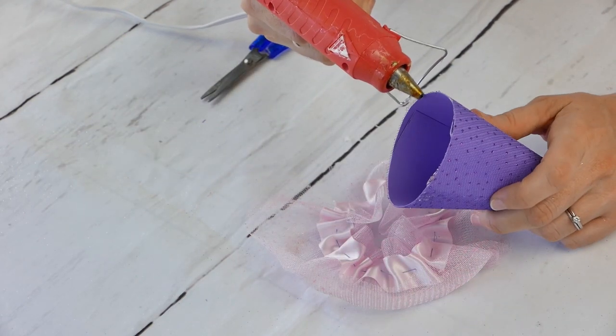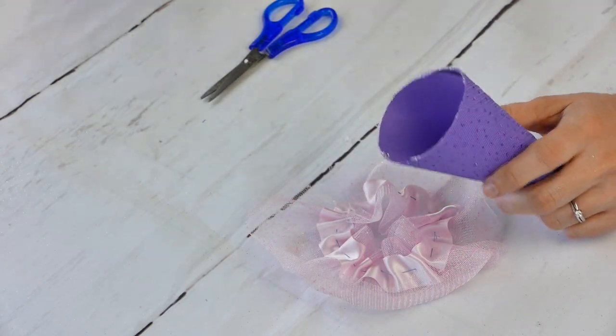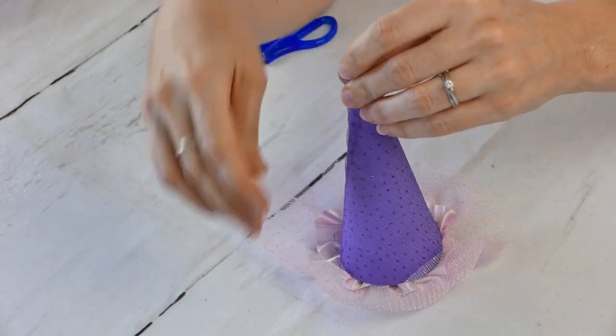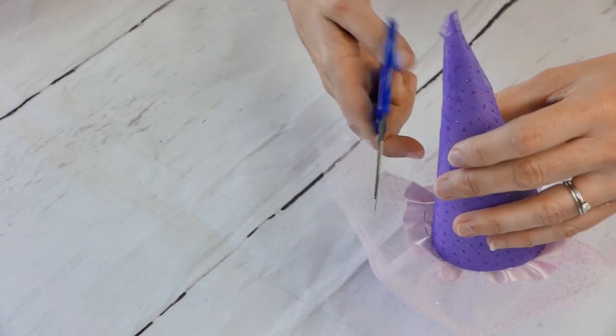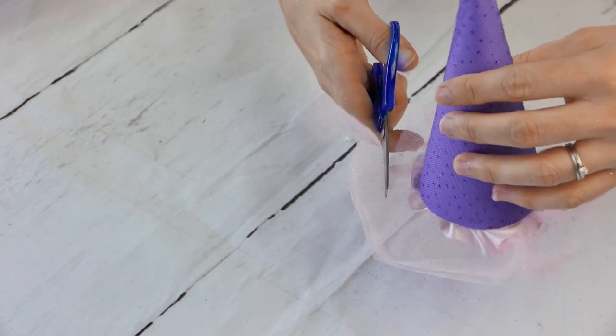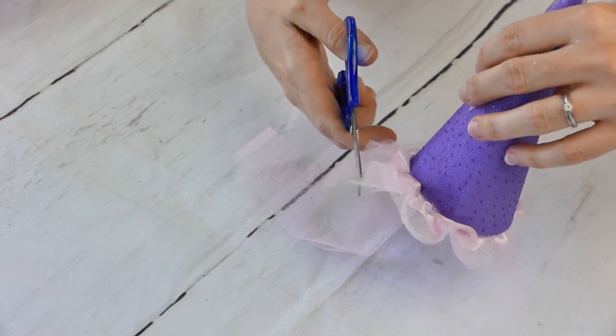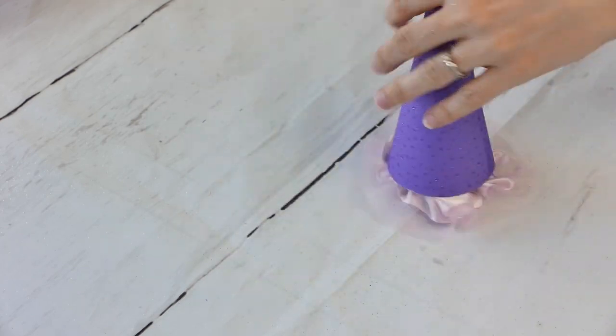So you don't have to get super complicated with this. You can definitely just do tulle or you can use something else to make the bottom really cute. But we just thought this just tied in the whole tutu skirt with the actual high chair look really nicely. Once that tutu is done, then you just put some glue at the very bottom of the hat and secure it.